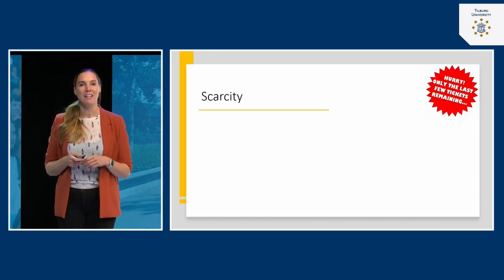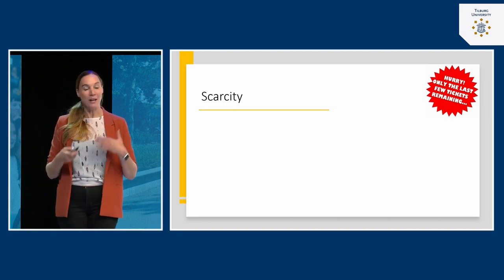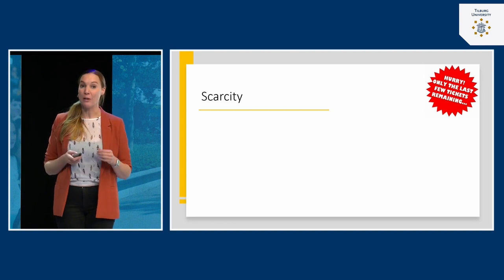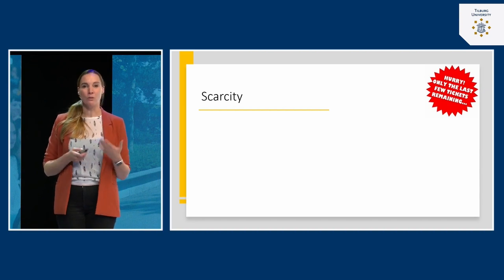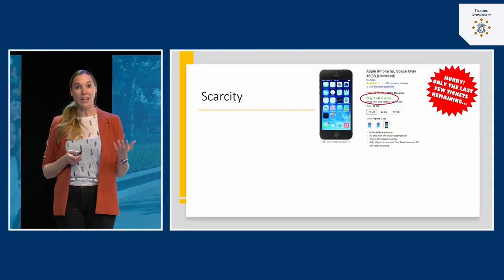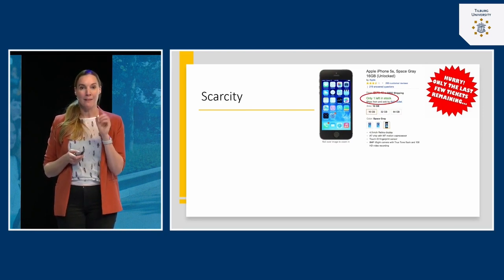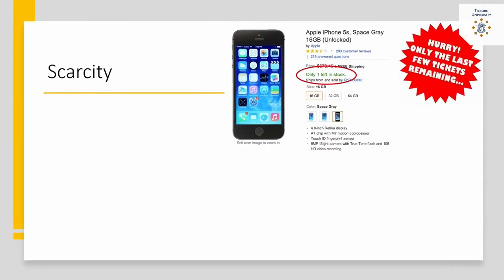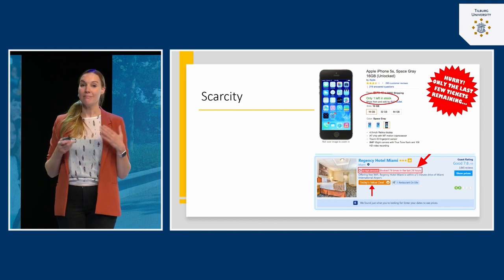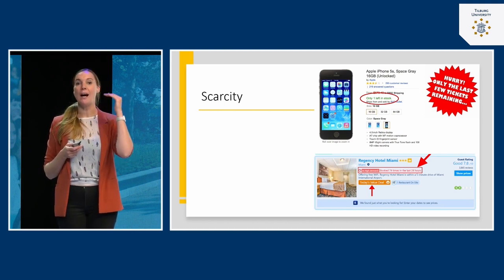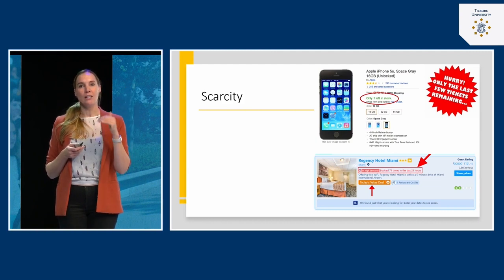The next principle is scarcity — 'get it while it's hot, there are only a few items left.' This happens often very subtly and you should be very aware of it. Imagine you're browsing to buy a new phone and you see the message: 'only one product left.' That's a very smart use of marketing. Similarly, when booking a hotel room, you see how many people are currently looking at it, and that only today's offer is available — so you need to decide now.